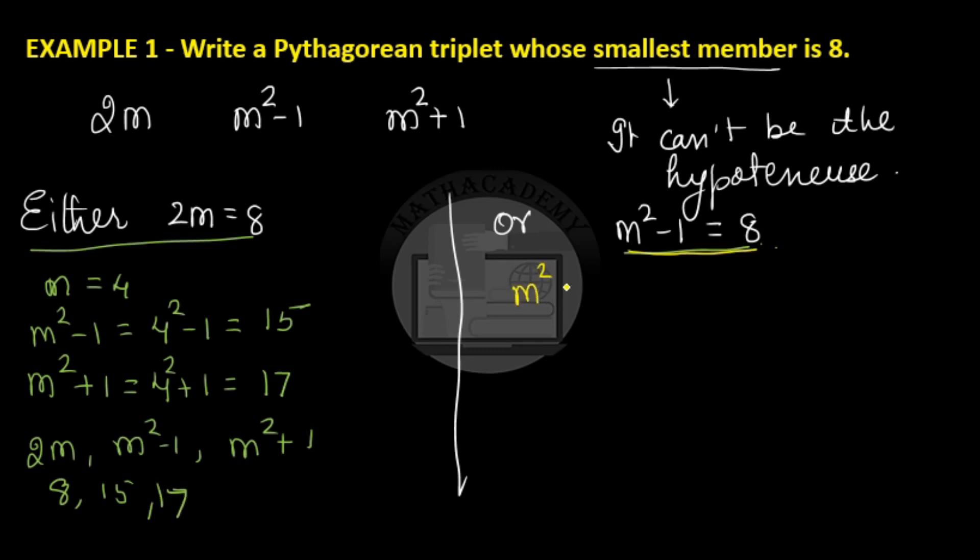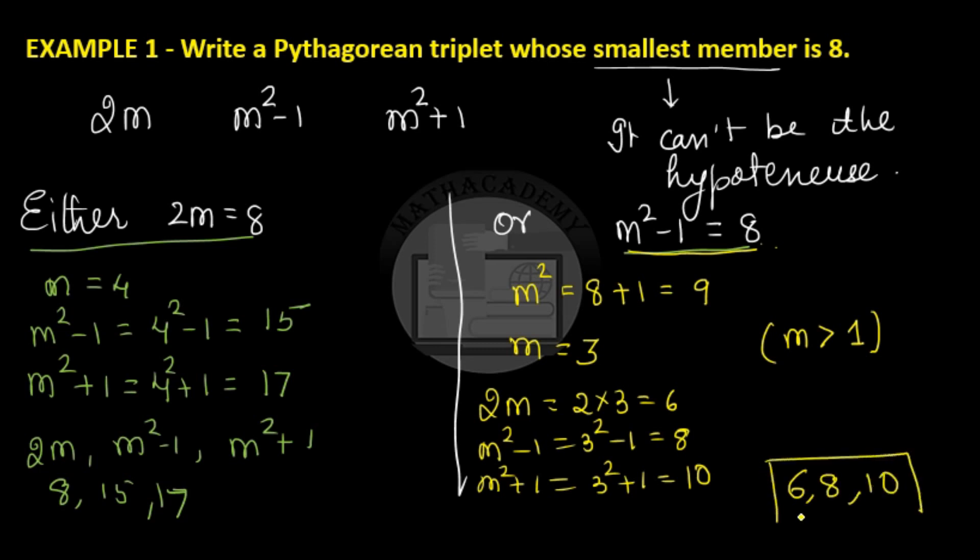If m² - 1 = 8, m² is 9, so m can be 3. Remember, m can't be negative 3 because m has to be greater than 1. So m has to be a positive natural number greater than 1. So m is 3. Now let us find all the 3. So 2m is 2 × 3 which is 6. m² - 1 is 3² - 1 which is 8 and m² + 1 is 3² + 1 which is 10. So the Pythagorean triplet which we get here is 6, 8 and 10. So we got 2 Pythagorean triplets here with the smallest member being 8.